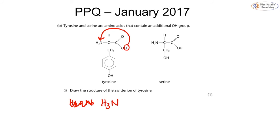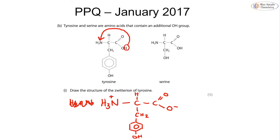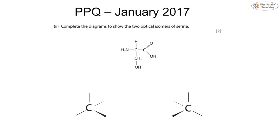We're going to have H3N+ with the carbon connected to the carbonyl and then the negative oxygen, and then we just complete the rest of the structure as shown in the diagram. The positive charge can be anywhere on the NH3+ and the negative charge should be on the oxygen. Make sure we don't place the negative charge on the phenol group at the bottom — it is the hydrogen from the carboxylic acid that moves to the NH2 group.